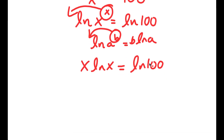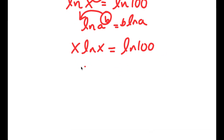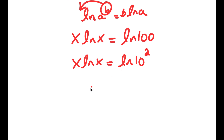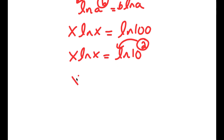Now ln 100 is the same thing as ln of 10 squared. So I get x times ln x is equal to ln 10 squared. And using the power rule again, I can move 2 to the front, so I get x times ln x is equal to 2 times ln 10.